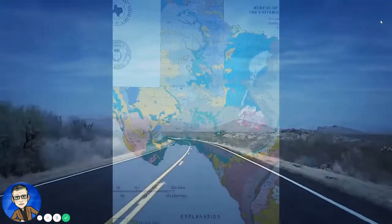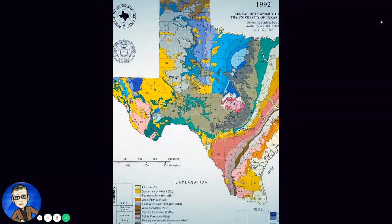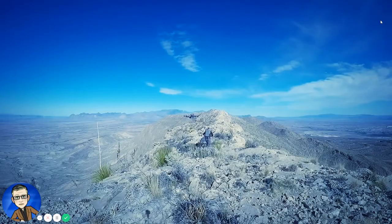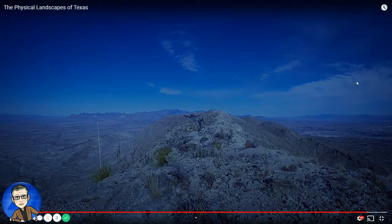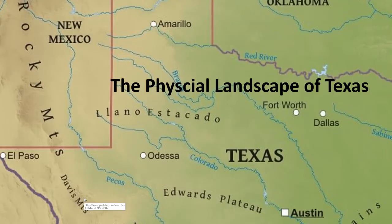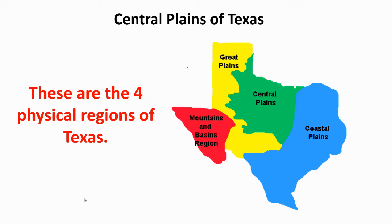What Texas will look like in one million years, or a hundred million years, no one can predict for sure. But its landscapes will continue to change. The physical landscapes of Texas are very varied. Again, there are four physical regions in the state, and today we are going to look at the central plains of Texas.